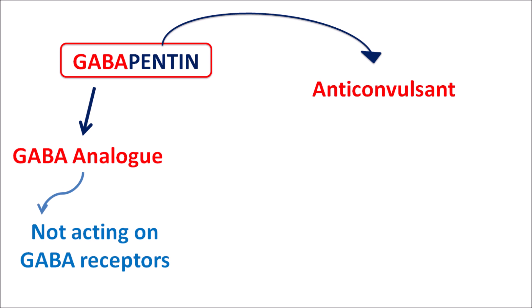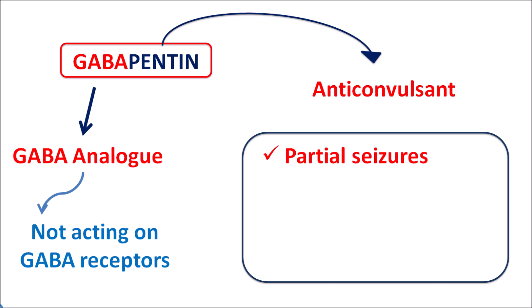Even though the exact mechanism is unknown, gabapentin still acts as an anticonvulsant. Its action is mainly attributed to inhibitory action on voltage-gated calcium channels. Since this drug blocks calcium channels, it reduces excitation, which is why it is used in the management of partial seizures.